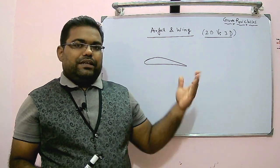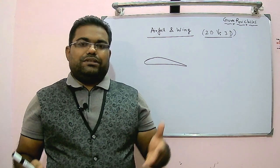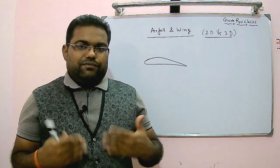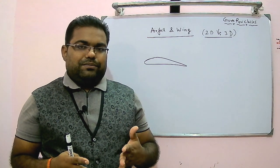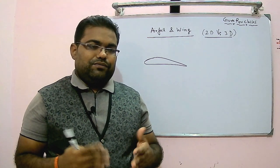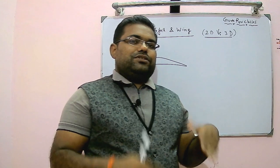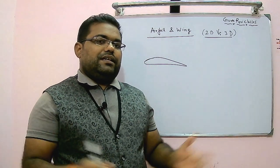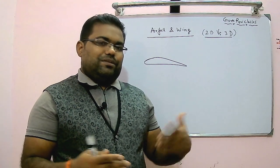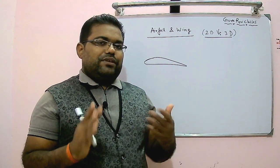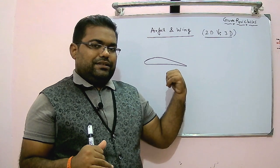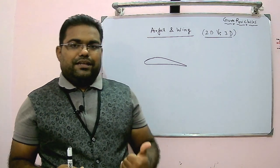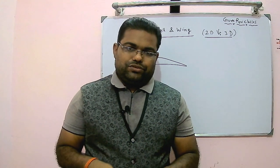The airfoil will not have any kind of span — only this cross-section that you are seeing is called the airfoil. The flow around it will be two-dimensional in nature. When the flow is two-dimensional, we are only concerned about the flow in 2D; the third dimension will have infinite length. So we can say the airfoil has an infinite span, which is not possible in reality. When doing analysis, we consider this as a two-dimensional geometry.